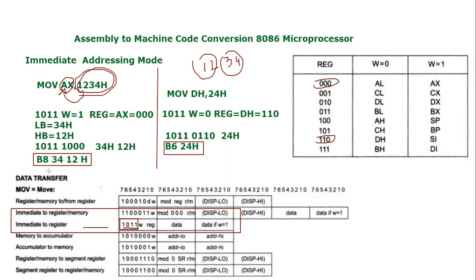I hope you have understood this assembly to machine code conversion for immediate addressing mode. Remember, this is not a general video tutorial for all immediate addressing mode instructions — we are only considering the MOV instruction. If you want to add or subtract immediate data, you have to follow the instruction set given in your book. If you need any other video tutorial on this topic, you can comment on my channel and I will try to upload videos according to your queries.